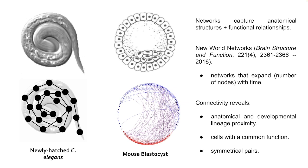One thing that differentiates embryo networks from static network representations is that these networks often grow — the number of cells increases, they change shape, and they change position. We need to use something akin to what they call new world networks from the brain network literature: networks that expand in terms of their number of nodes with time. We take images of different stages of development and compare the networks, accounting for this expansion in our representation.